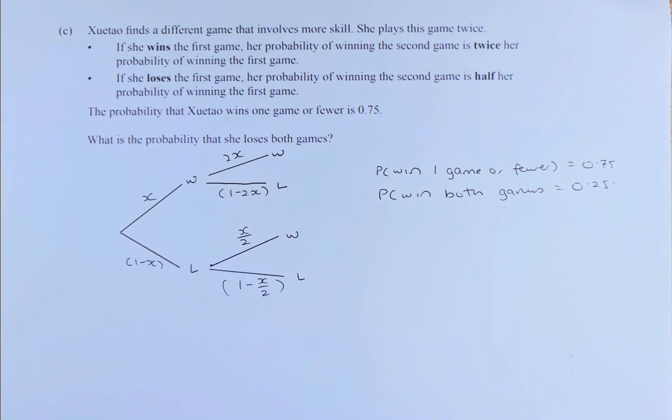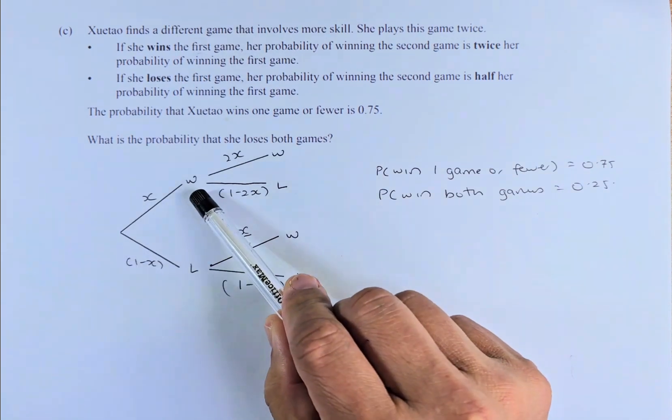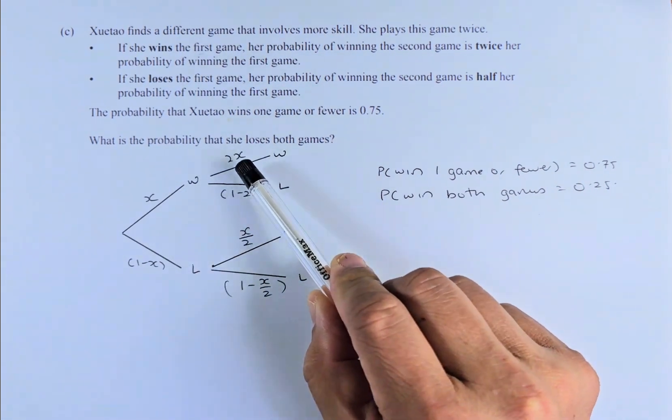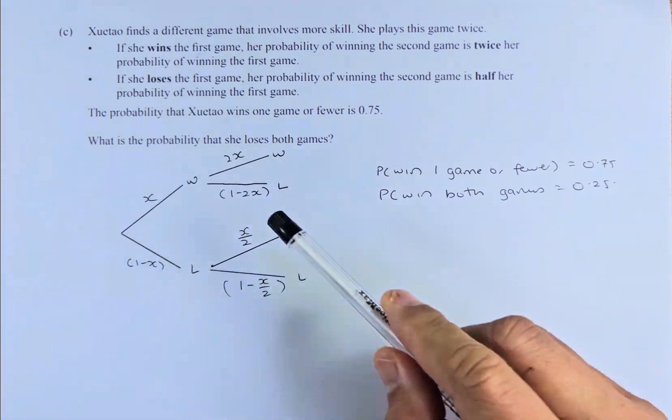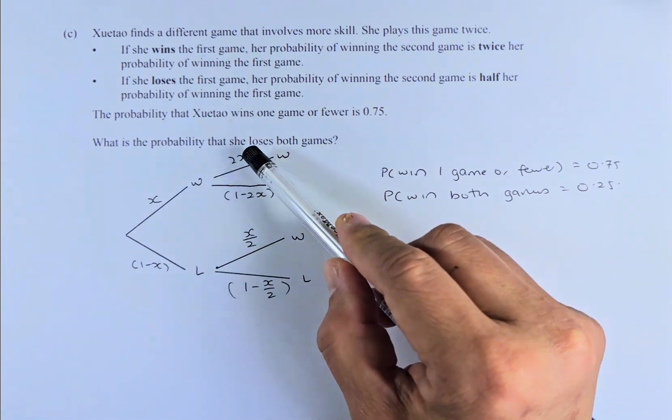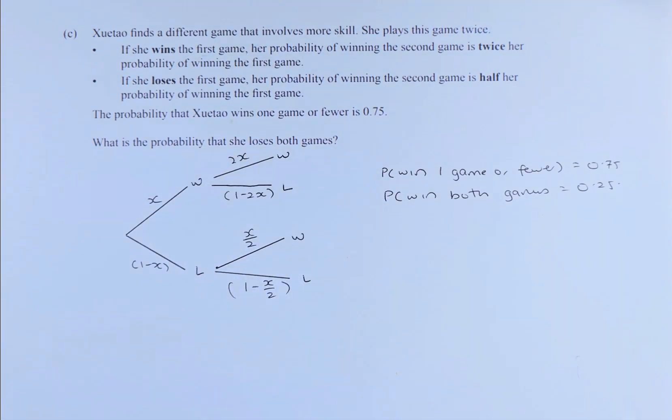Xu Tao finds a different game that involves more skill. She plays the game twice. If she wins the first game, the probability of winning the second game is twice the probability of winning the first game. So if she wins the first game, the chance of winning the second game is 2X. If X is the chance of winning, double the chance is 2X, and losing will be 1 minus 2X because these two numbers must add up to 1.